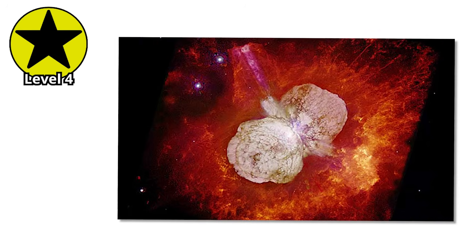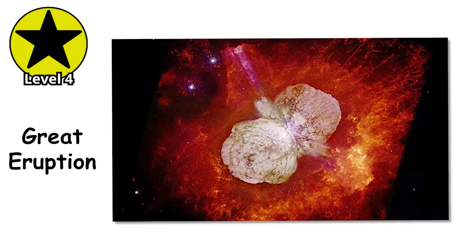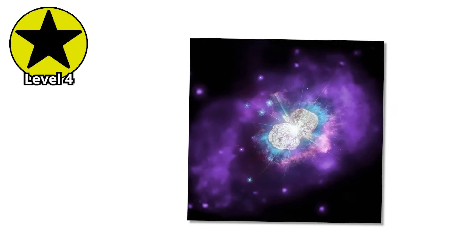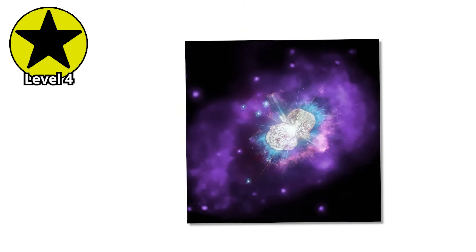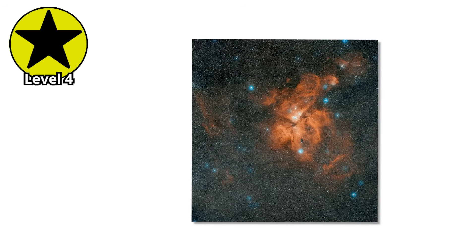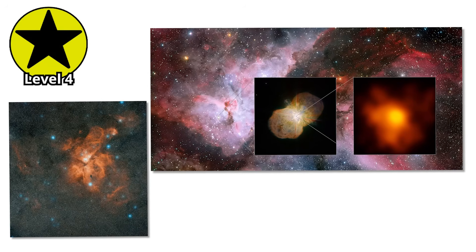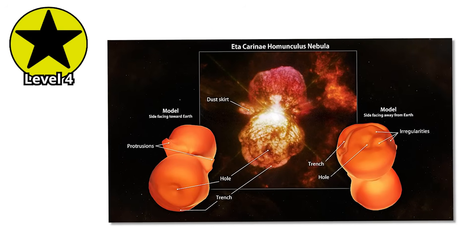It's estimated to be around 100 to 150 solar masses and puts out 5 million times more light than the sun. In the 1840s, it underwent an eruption called the Great Eruption, briefly becoming the second brightest star in the night sky despite being thousands of light-years away. During that outburst, it ejected material equivalent to several solar masses, creating the stunning Homunculus Nebula that surrounds it today.